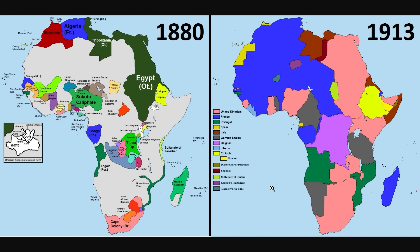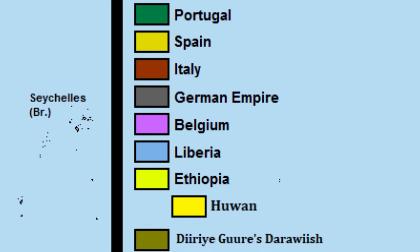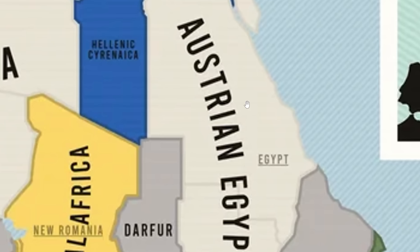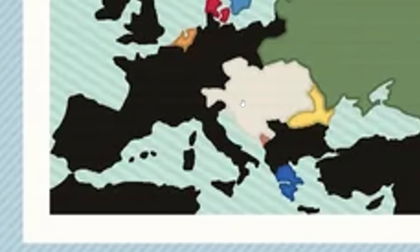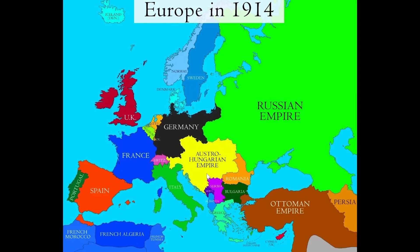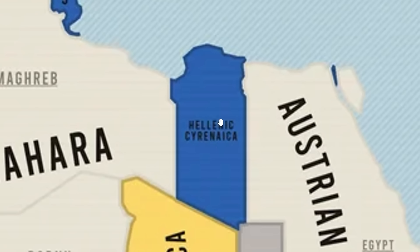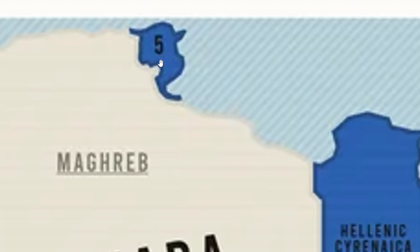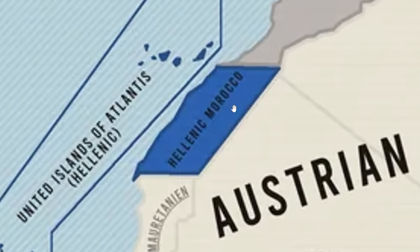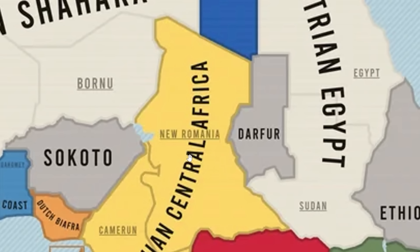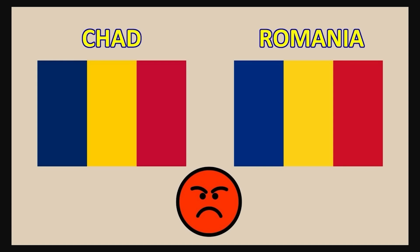What if Africa was divided between the other European nations — not Portugal, Belgium, Germany, France, or Britain? In this world, we have Austria and the Sahara, plus Austria-Egypt over here. It makes sense to give them North Africa since they're the closest. This is a pre-WW1 world. Greece is getting a part of Libya, the Suez Canal, and Tunisia — they've gone back to calling themselves the Hellenic Empire. The Greeks have small scattered spots throughout the continent, mostly in the north. Then there's Romanian Central Africa.